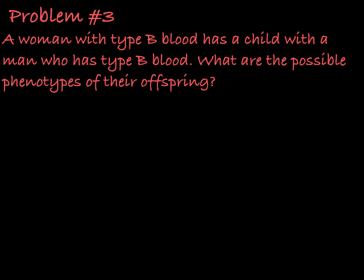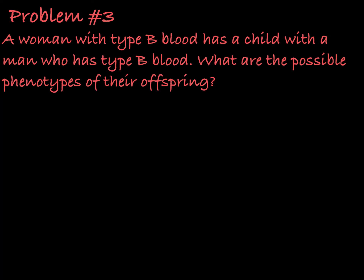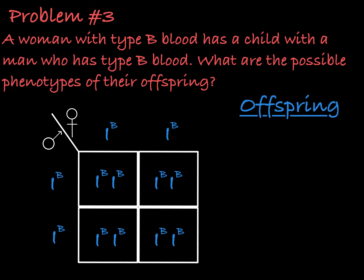Next question. A woman with type B blood has a child with a man who has type B blood as well. What are the possible phenotypes of their offspring? To have type B blood, a person can either be homozygous ib or heterozygous ib little i. If both parents are homozygous, they can only contribute ib alleles to their offspring, and their offspring will be homozygous ib.